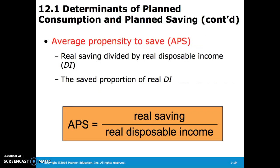The average propensity to consume is real consumption divided by real disposable income — the percent of disposable income that is consumed. The average propensity to save is real savings divided by real disposable income, or the percent of disposable income saved. Since we must either consume or save disposable income, the average propensity to save is equivalent to 1 minus the average propensity to consume.